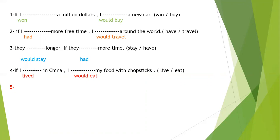Look at the second sentence: 'If I had more free time, I would travel around the world.' With 'if' we put verb two — 'had' — and the second part 'would travel'. Next: 'They would stay longer if they had more time.' Here we put 'would stay' for the first space and 'had' for the second space. 'If they had more time, they would stay longer.'